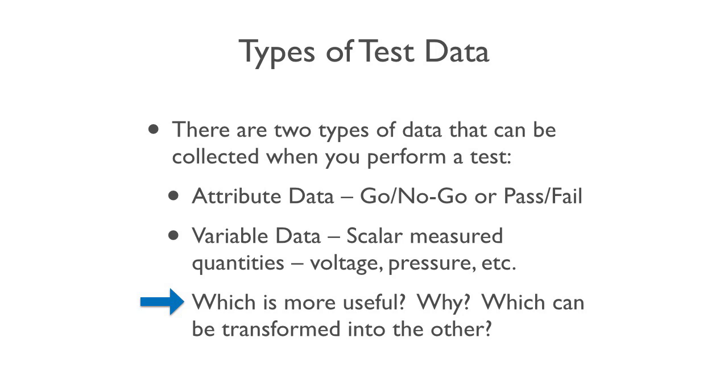Types of test data. There are two types of data: attribute data and variable data. Attribute data is like pass/fail, go/no-go. And variable data is the actual measured quantity. This may seem like a trivial distinction, but it's actually pretty important.